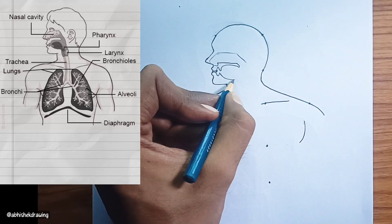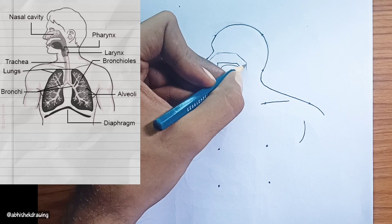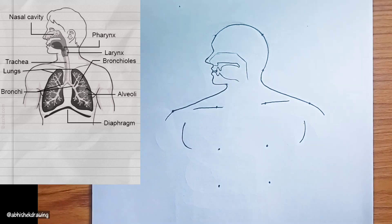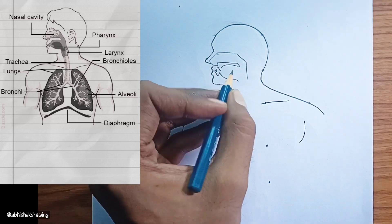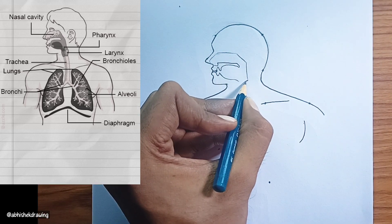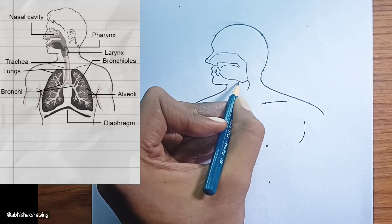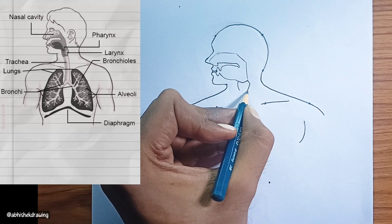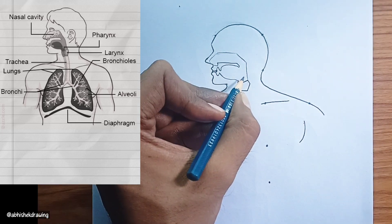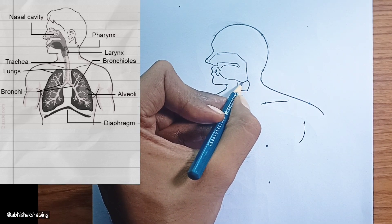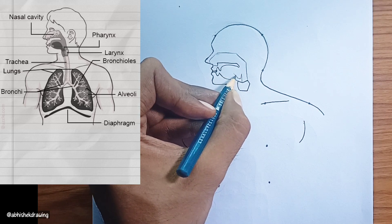Alveoli. These are microscopic air sacs located at the end of the bronchioles. They are surrounded by capillaries and are the actual sites where oxygen from inhaled air diffuses into the bloodstream and carbon dioxide from the blood diffuses into the air to be exhaled.